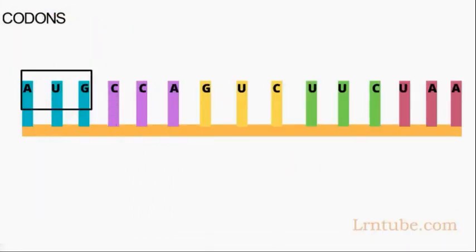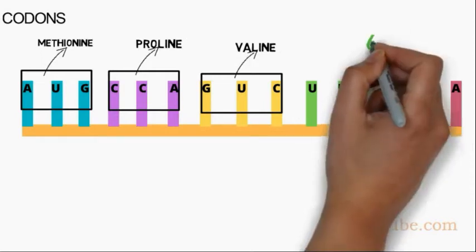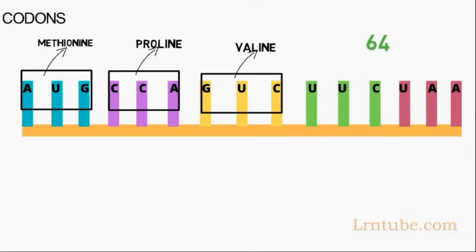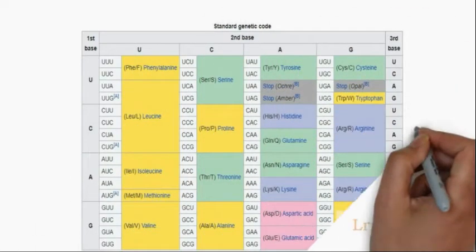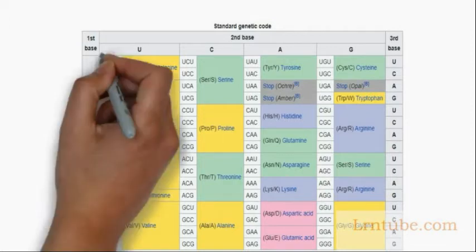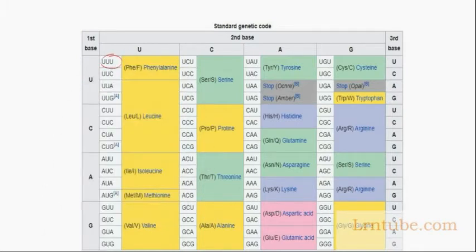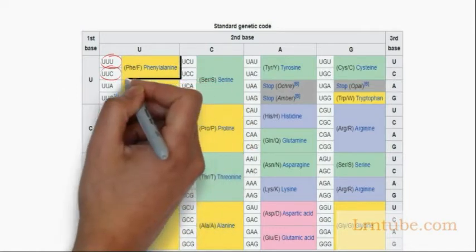Codons. A codon is a trinucleotide sequence of DNA or RNA that corresponds to a specific amino acid. Each codon consists of three bases, and there are 64 codons in total. All codons are written in the 5' to 3' direction. When we say a codon represents a specific amino acid, it means that whenever you see the codon UUC, it will always represent phenylalanine.